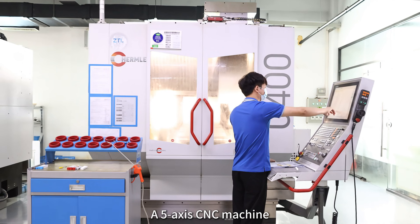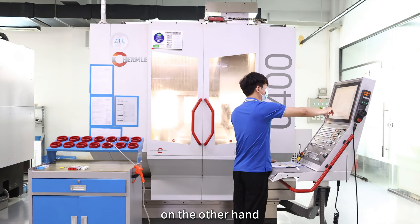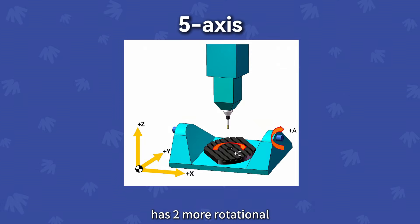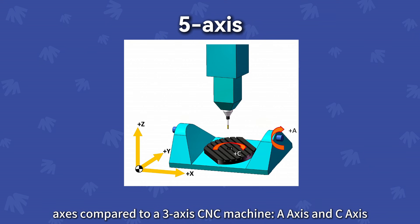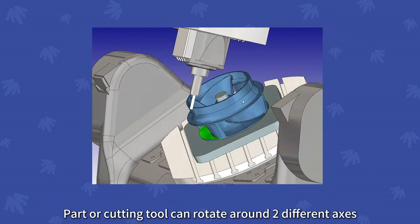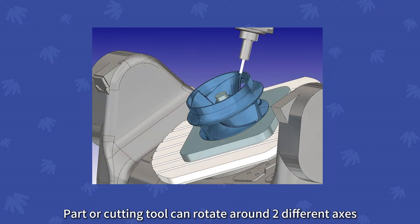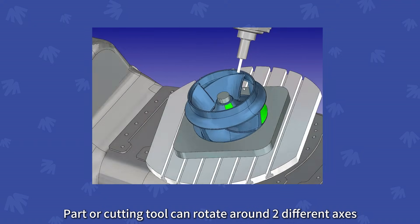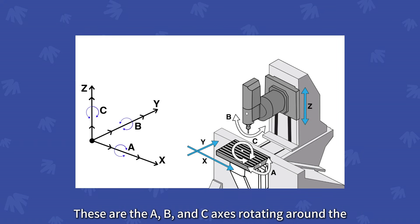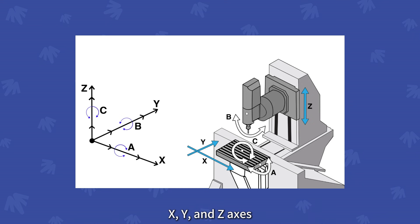A 5X CNC machine, on the other hand, has two more rotational axes compared to a 3X CNC machine. The cutting tool can rotate along two different axes — these are the A, B, and C axes — in addition to routing along the X, Y, and Z axes.